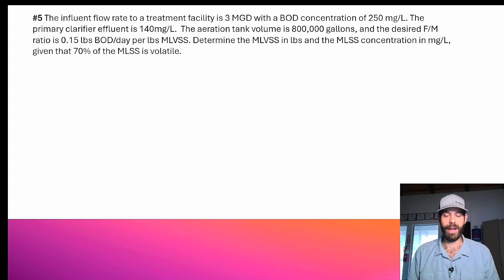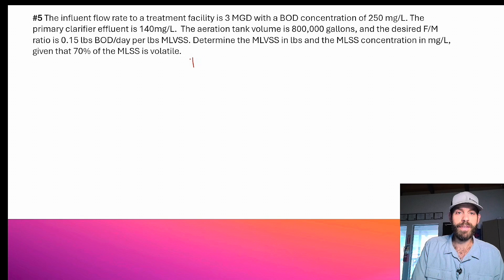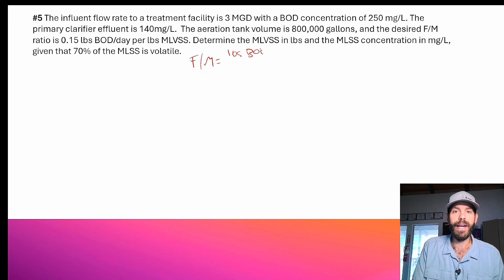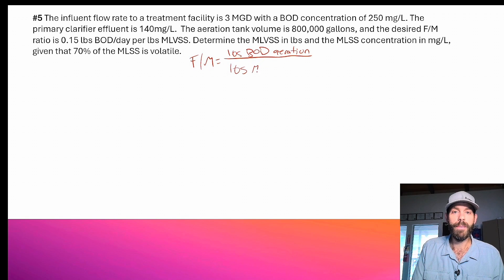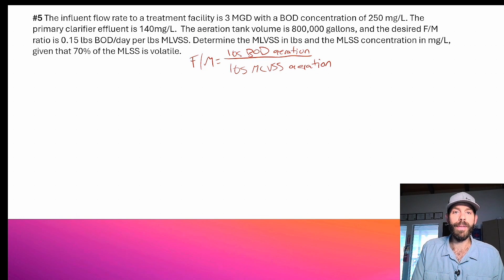Let's remember what the F:M ratio is. It's pounds of BOD per day entering aeration — and that's a key difference between what's entering the plant and what's entering aeration — divided by the pounds of MLVSS in aeration. I know my pounds BOD per day because I'm given that in the math problem. So that's going to be 3 times 8.34 times 140 milligrams per liter.